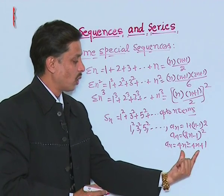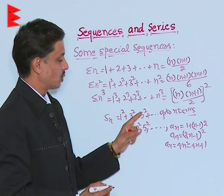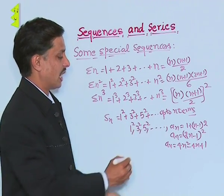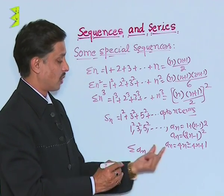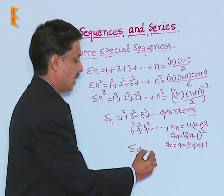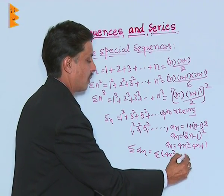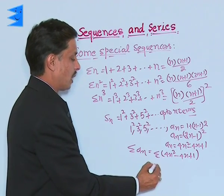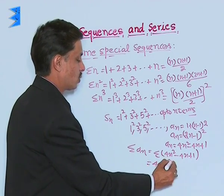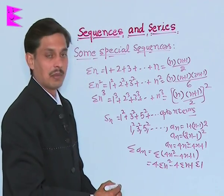I want to calculate sum of 1 square plus 3 square plus 5 square up to n terms. That means, I want to find sigma aₙ, that is, sum of all such terms. That is, sigma 4n square minus 4n plus 1, which becomes 4 sigma n square minus 4 sigma n plus sigma 1.